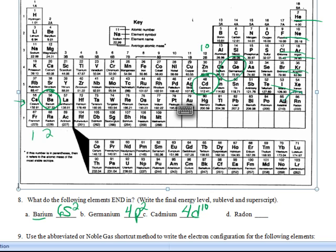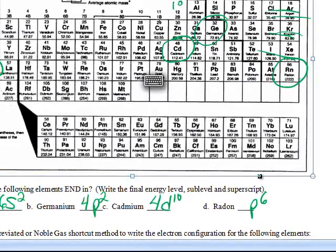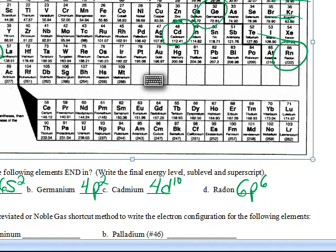And then radon, way down here, is in the p block. It's the last column. So it's p6. And it's 1, 2, 3, 4, 5, 6. So it's 6p6. Okay. So you should be able to use the periodic table to predict what they're going to end in.